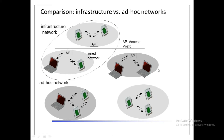This type of network can use different access schemes with or without collision. A collision may occur if the medium access of the wireless nodes and the access point is not coordinated. However, if only the access point controls the medium access, no collisions are possible.